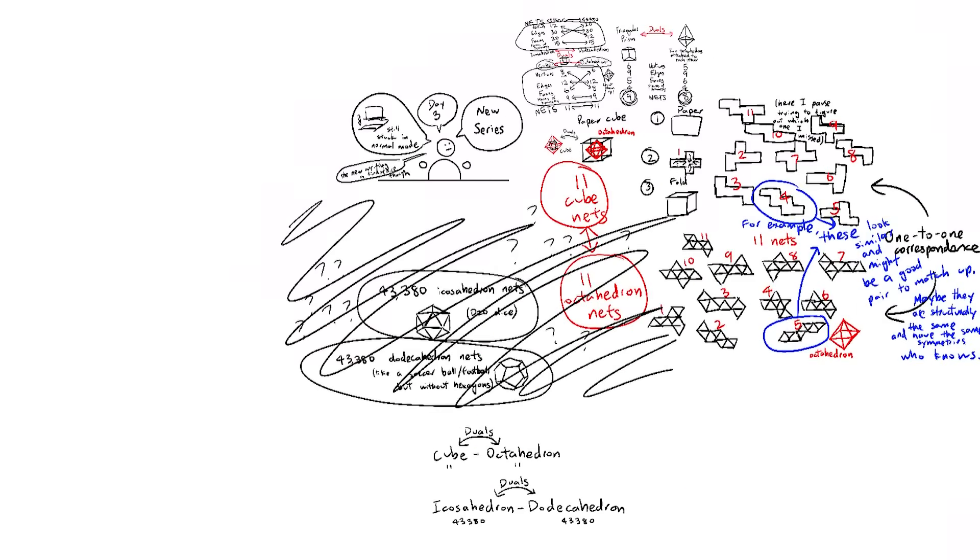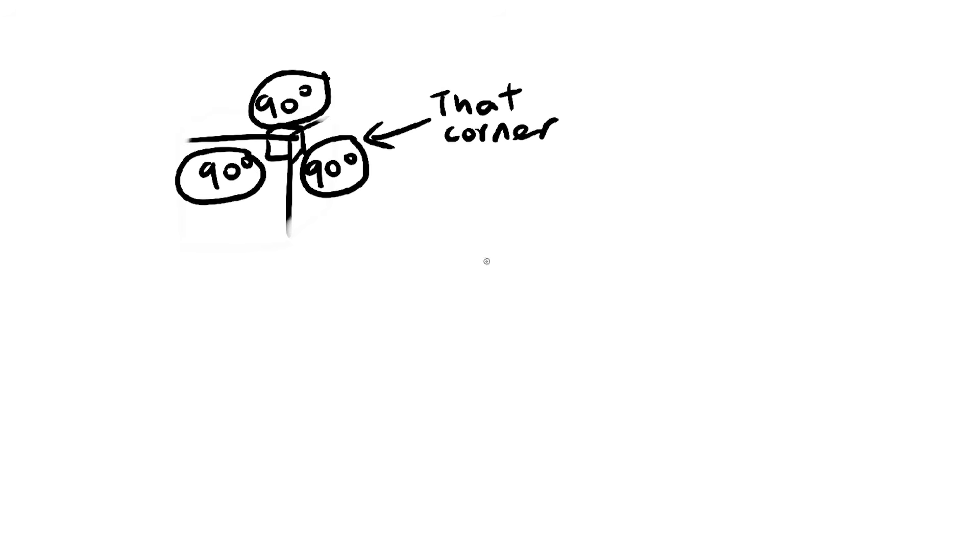Okay, I don't want to leave you on a cliffhanger this video, so here's a short little puzzle I made up. Look at the corner of this cube. See how all three angles are 90 degrees? I want to change that, but still keep all three angles the same. For example, in this configuration, all three angles are 60 degrees. The question is, what is the maximum angle you can have?